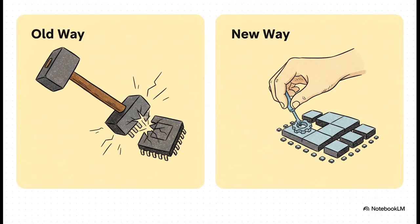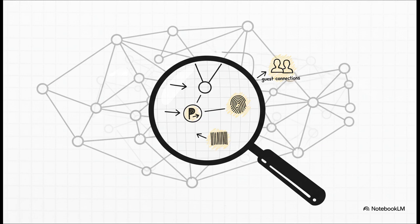Nested virtualization also got a whole lot smarter. The old way was like a sledgehammer — you basically had to expose your entire host CPU to the guest. Now it's more like a surgical tool. You can pick and choose specific features to enable on a per-virtual-CPU basis — way more secure and a lot more efficient. And for you networking folks, software-defined networking gets a massive visibility boost in the GUI. You can finally see which guests are plugged into which networks, view learned IP and MAC addresses, and see all your fabric details right there in the tree. If you've ever tried to troubleshoot a complex SDN setup, you know this is an absolute lifesaver.